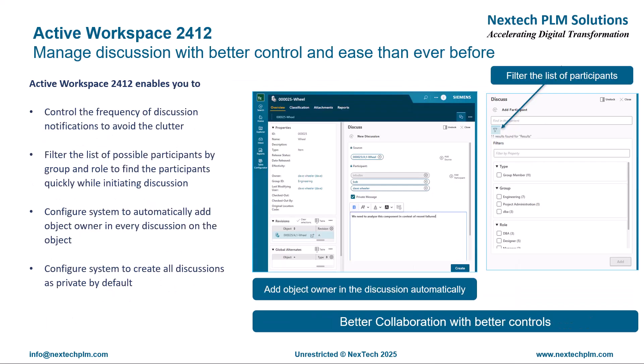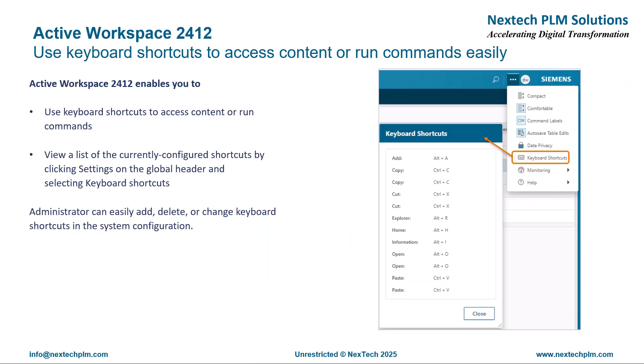Active Workspace 2412 brings several improvements while managing discussions. These improvements enable you to control the frequency of discussion notifications to avoid clutter, easily find participants with the help of filters, automatically add the object owner in every discussion, along with the option to make every discussion private. This helps you easily manage your discussions and have better control on those.